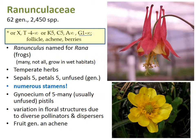The Ranunculaceae family is wide-ranging, found pretty much everywhere around the world aside from Antarctica and the Sahara Desert. There are 62 different genera and over 2,000 species. The name of the genus comes from the Greek rana, for frog, because many of these plants grow in wet habitats or moist environments. The sepals and petals will generally be unfused, and there will be five sepals and five petals, though sometimes they can be highly modified, as in the columbine.